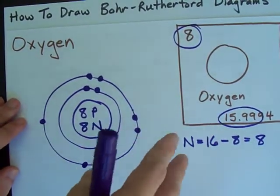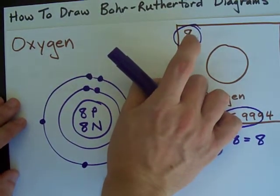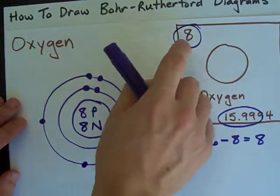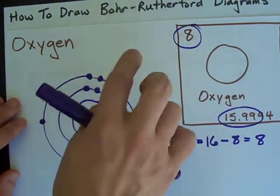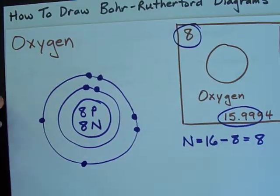If you're looking to draw the Bohr-Rutherford Diagram for an element with an atomic number greater than 20, you're going to have to do it in a little bit more of a difficult way. Check out my other video for that. Best of luck!